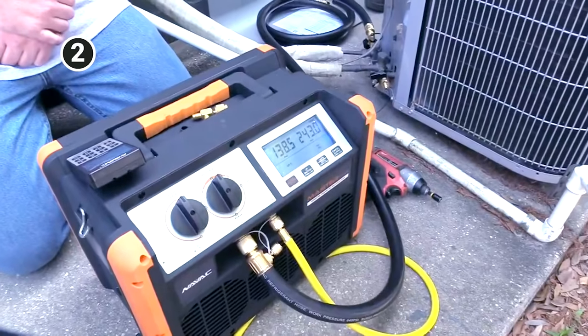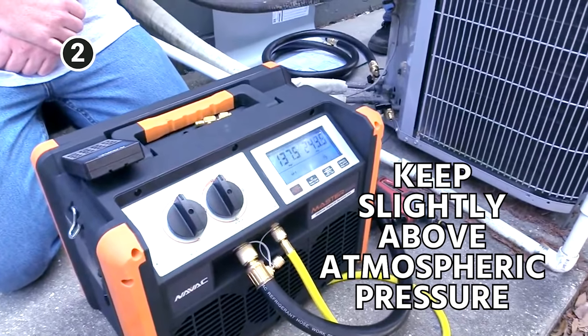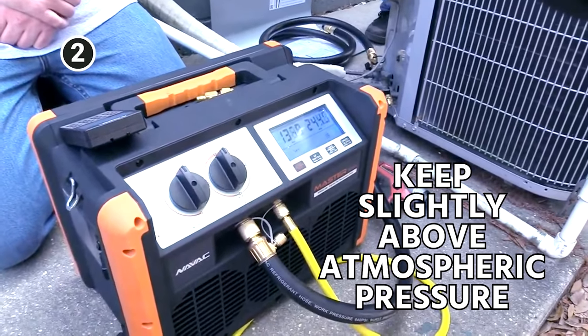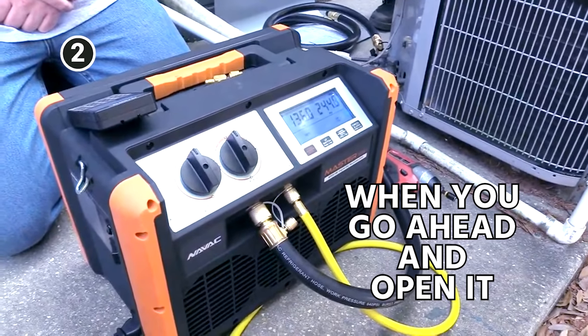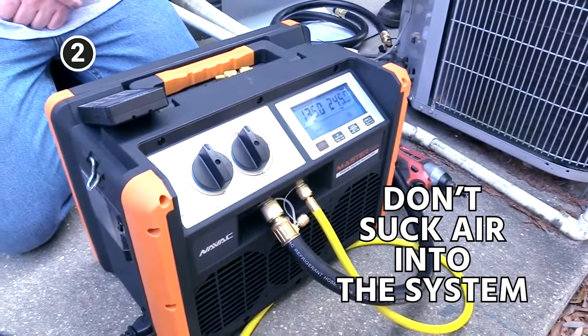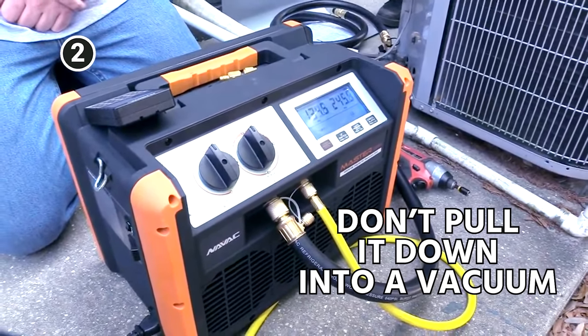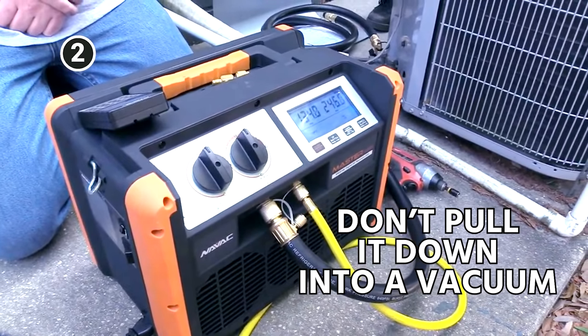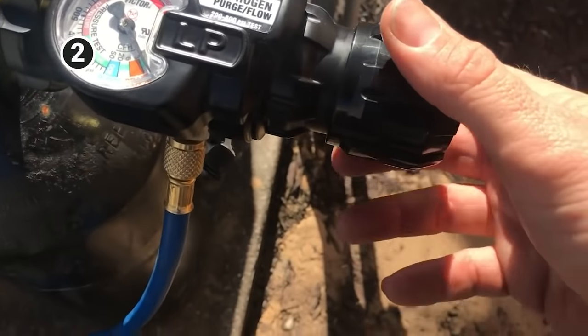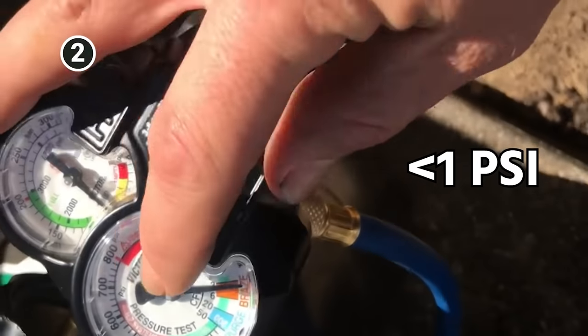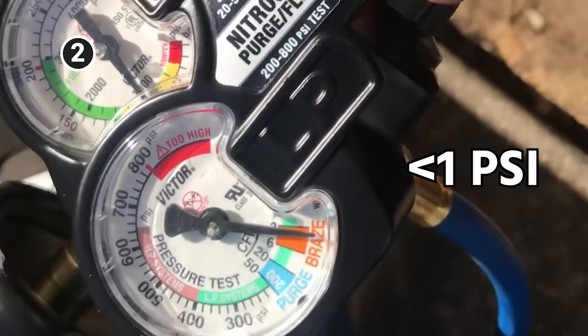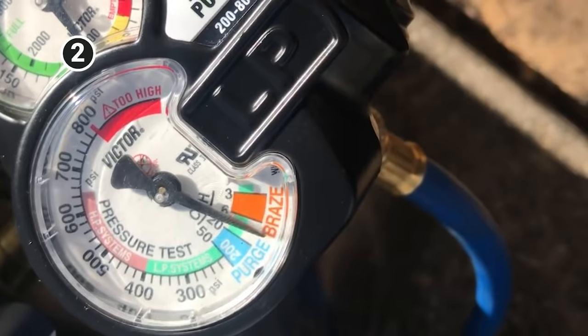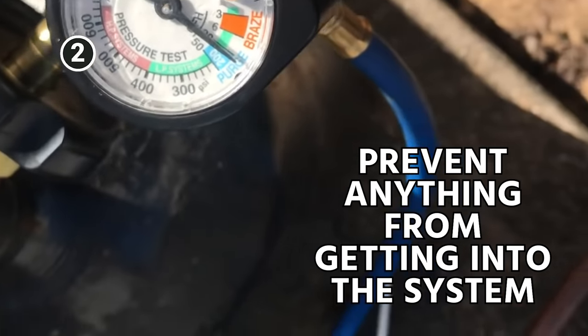Then go ahead and recover out that last little bit, but still keep just slightly above atmospheric pressure in the system when you go ahead and open it. You wouldn't want it to suck air into the system. So never pull it down into a vacuum when you're about to do a repair like this. It's actually a good idea once you get down to just under one PSI to go ahead and begin flowing nitrogen right at that stage. It's going to make your vacuums a lot easier and it's going to help prevent anything from getting into the system.